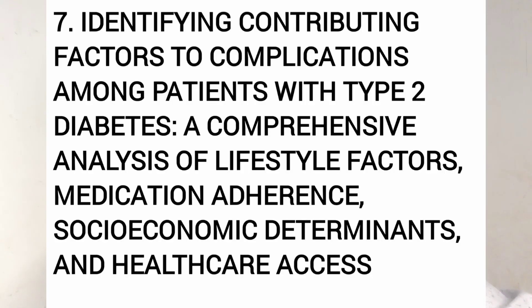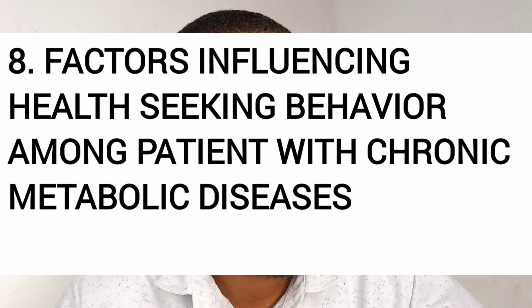Number seven: contributing factors to diabetic complications among patients with type 2 diabetes. Number eight: factors influencing health-seeking behaviour among patients with chronic metabolic diseases like diabetes and hypertension. What are the factors that influence their health-seeking behaviour? Some patients do more regular visits than others. Why do some patients not adhere to medication or follow health advice?